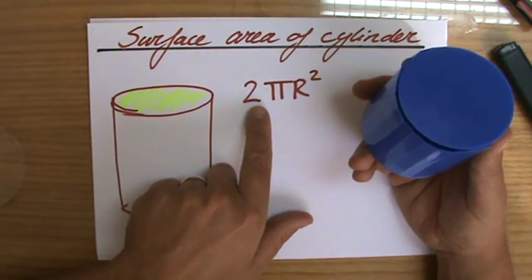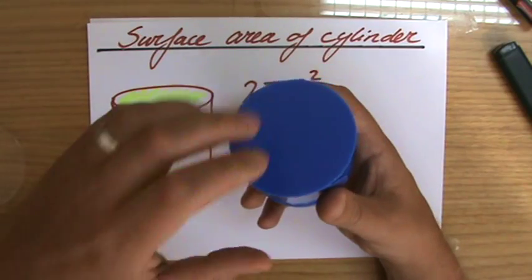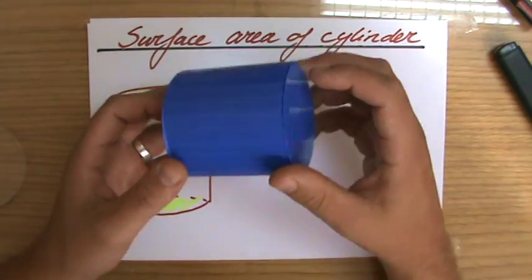It's important to realize again, it's two times pi r squared, because perhaps in some occasions they say, well, this could be a can of baked beans and they took the lid off.